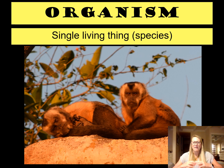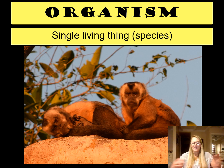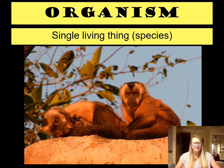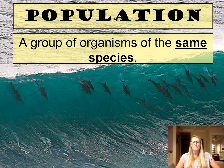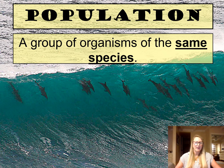The first level of hierarchy in ecology is the organism. An organism is pretty much a single living thing. Sometimes we call them species if they're able to mate and produce viable offspring. You put a whole bunch of organisms that are the same together and you make what's called a population — a group of organisms of the same species living in the same area.